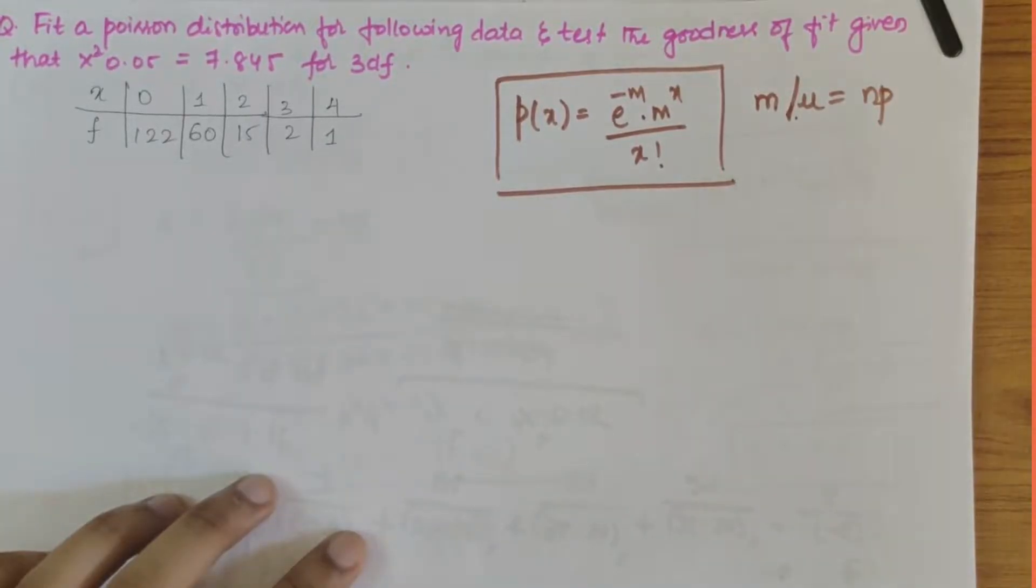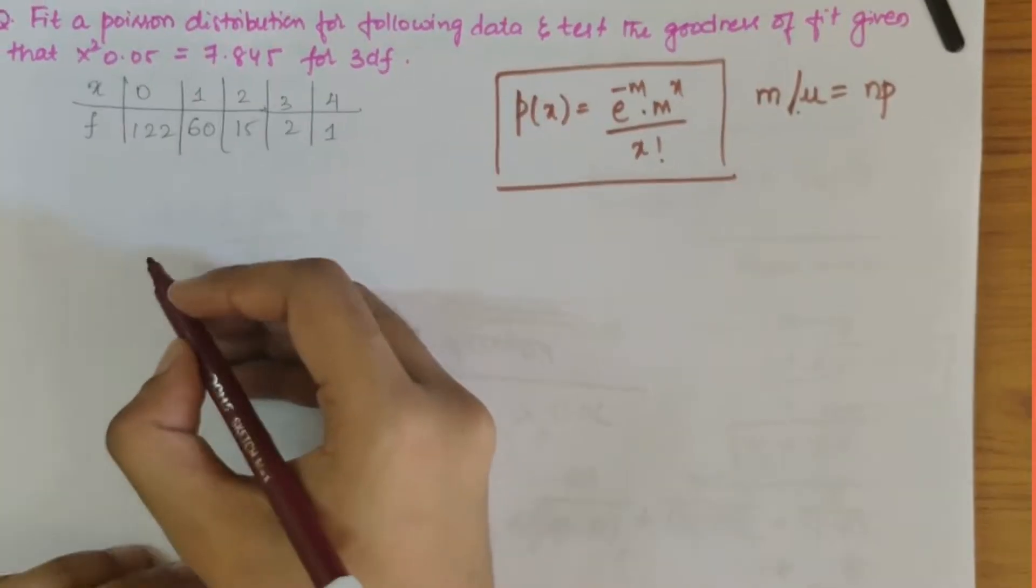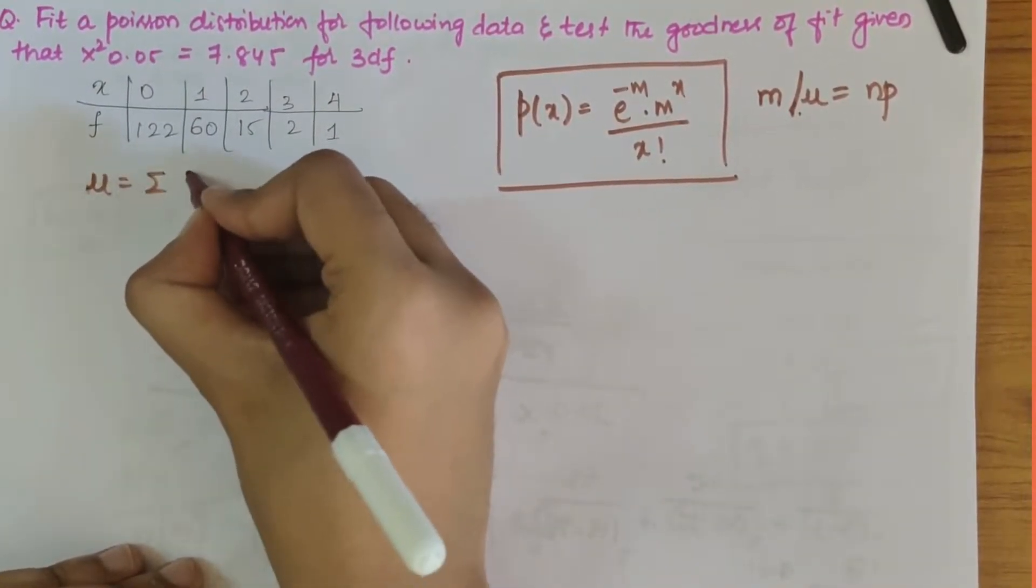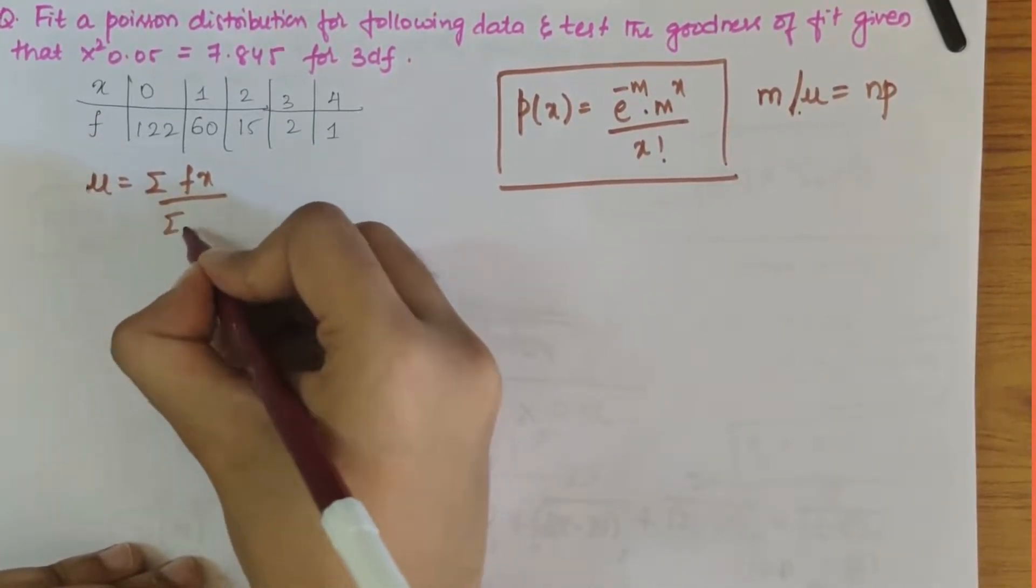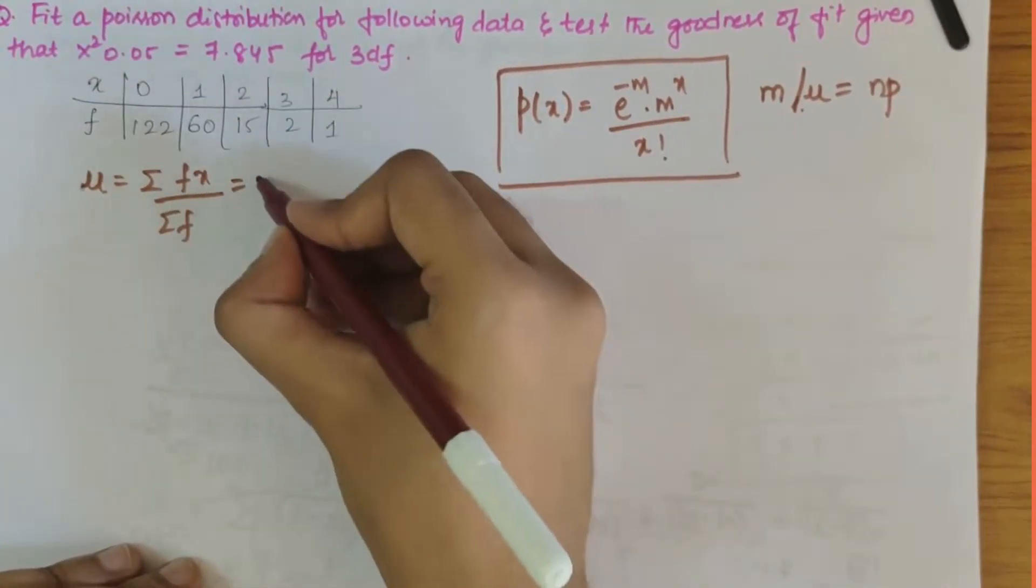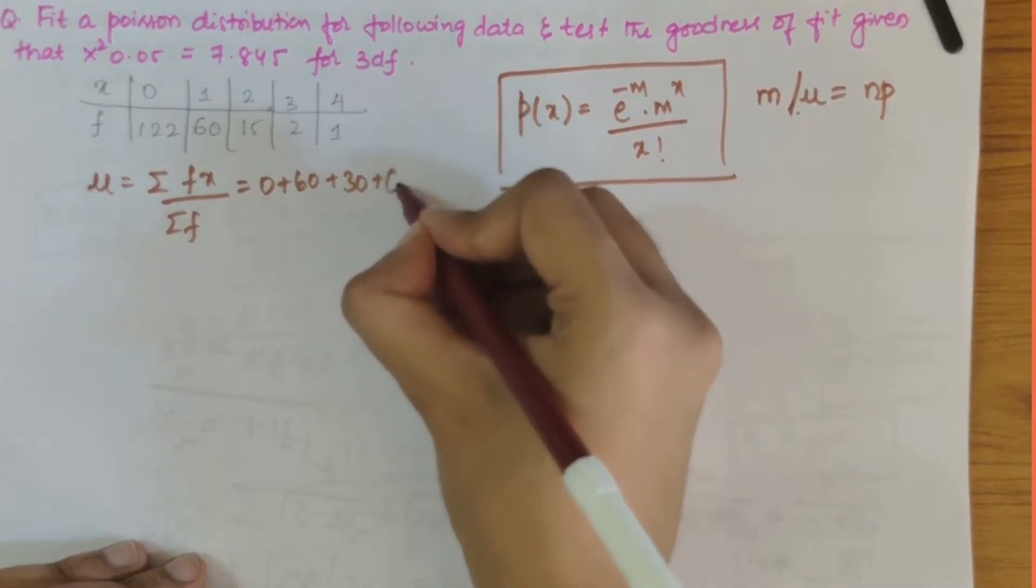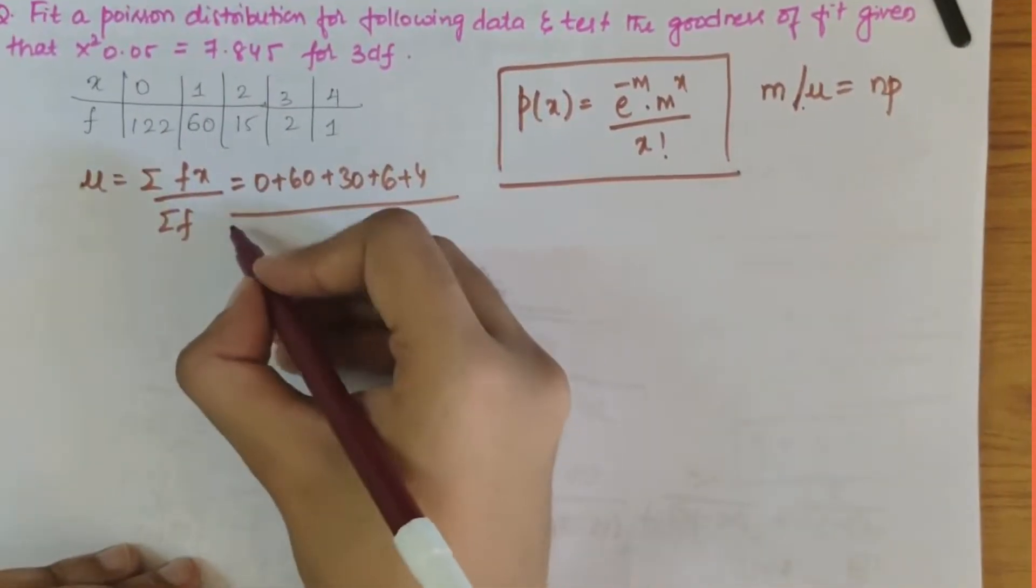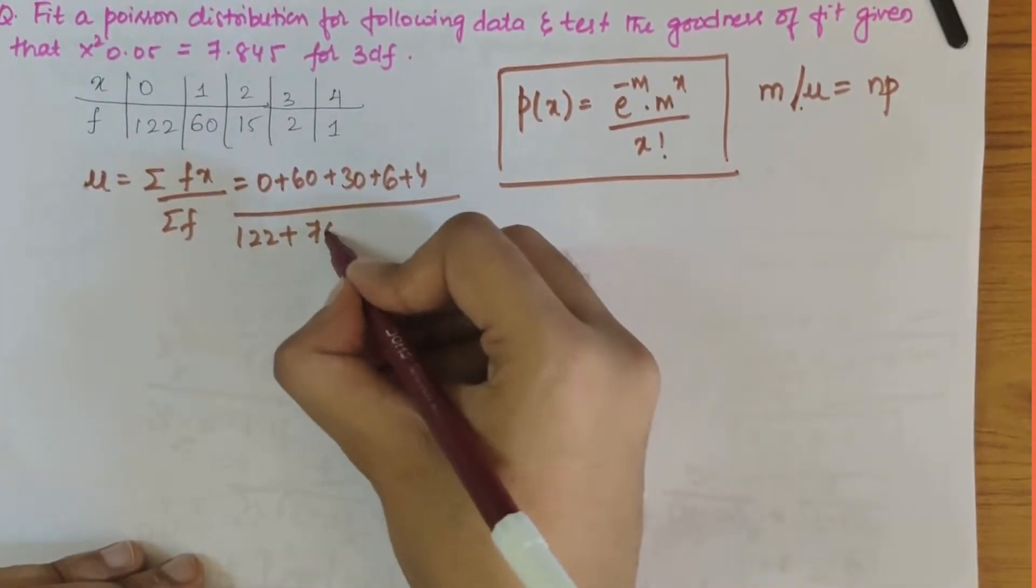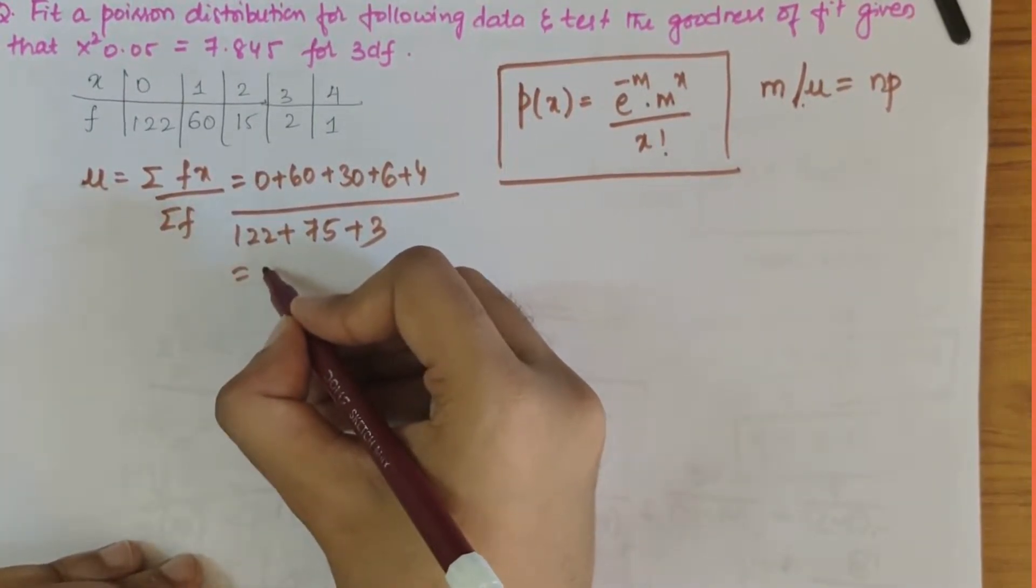Let's calculate the mu value. That is summation of f times x divided by summation of f. That would be 0 times 122 is 0, plus 1 times 60 is 60, plus 2 times 15 is 30, plus 3 times 2 is 6, plus 4 times 1 is 4. The denominator is 122 plus 60 plus 15 plus 2 plus 2 plus 1.